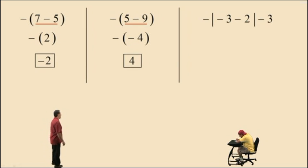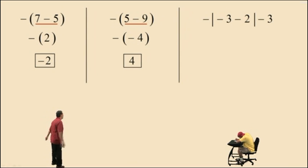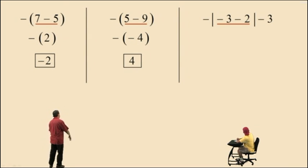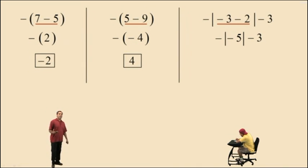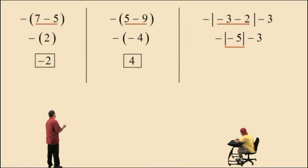Here we have the opposite of the absolute value of the expression negative 3 subtract 2, subtract 3. We have to evaluate what's inside the absolute value first. Negative 3 subtract 2 is negative 5. Bring down the absolute values and the rest of our work. We still have an absolute value — that's in the first category of order of operations — so we evaluate the absolute value of negative 5, which is positive 5.